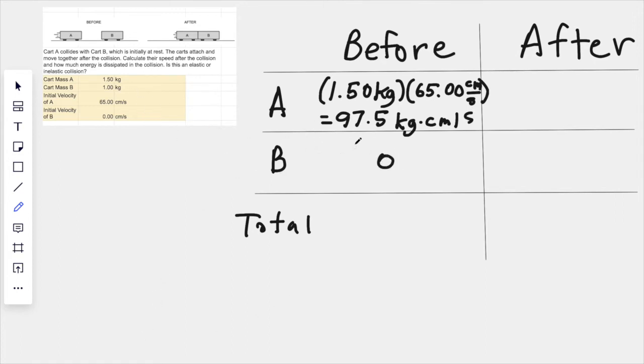Cart B is not moving so it has a momentum of zero. I could plug in its mass times zero but it's not really necessary. So the total momentum before the collision is all in cart A, and just to specify, I'll call it positive 97.5 kilogram centimeters per second. After the collision, and we know that they're stuck together, that's a key piece of information, so they will be moving together with the same speed.